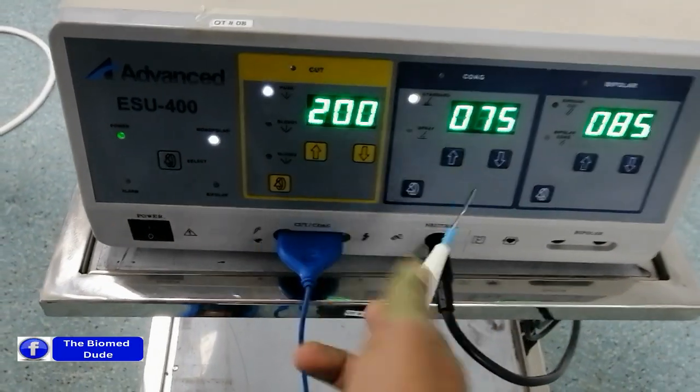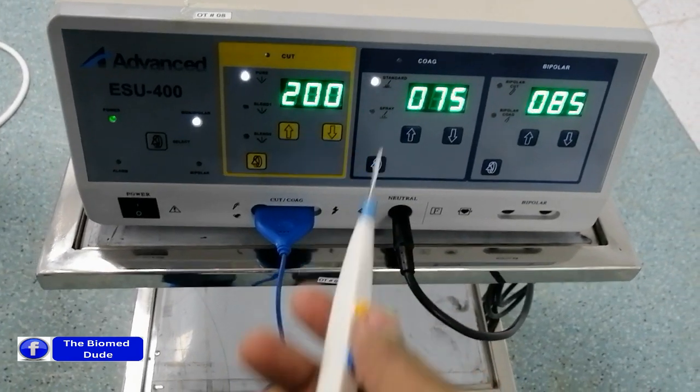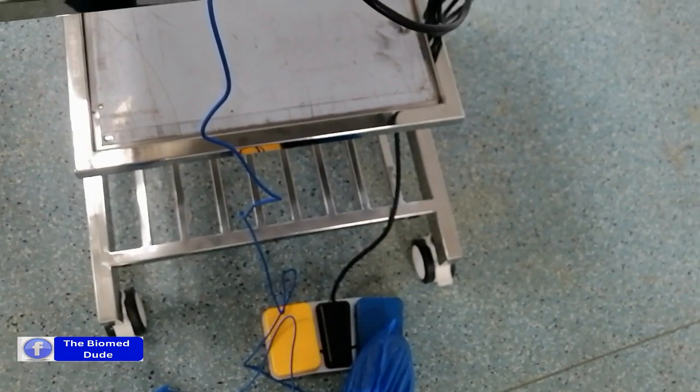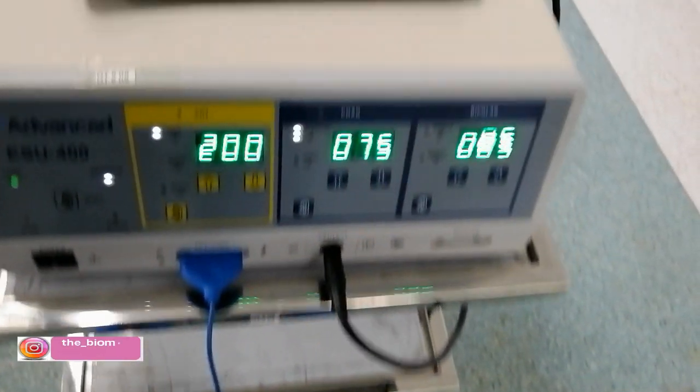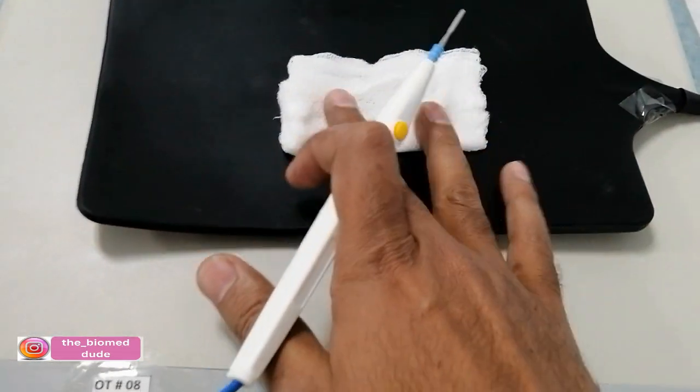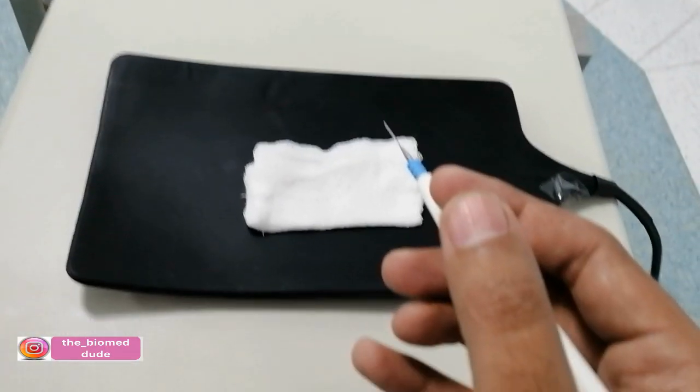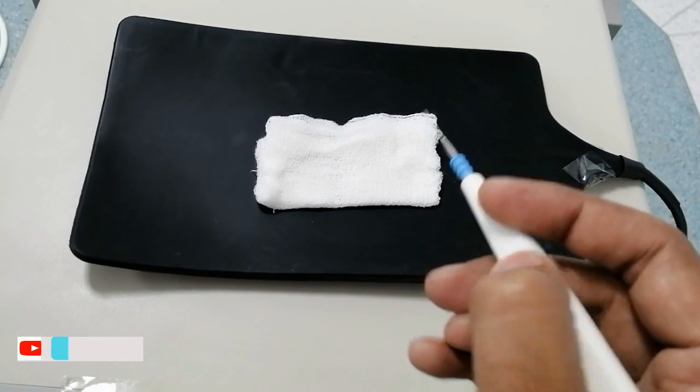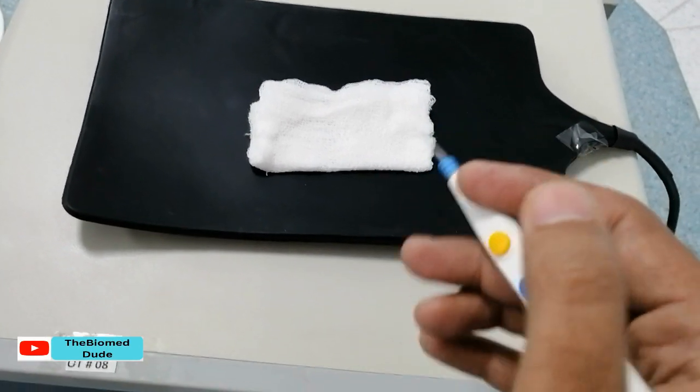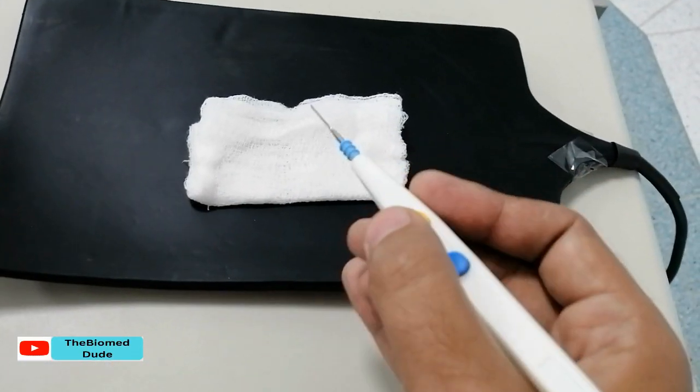So I just connect this monopolar handpiece. This is the monopolar handpiece and here is the switch controller. This iron applies on the wet gauze piece. The electrosurgical unit has dual operation: the handpiece and the foot switch as well.